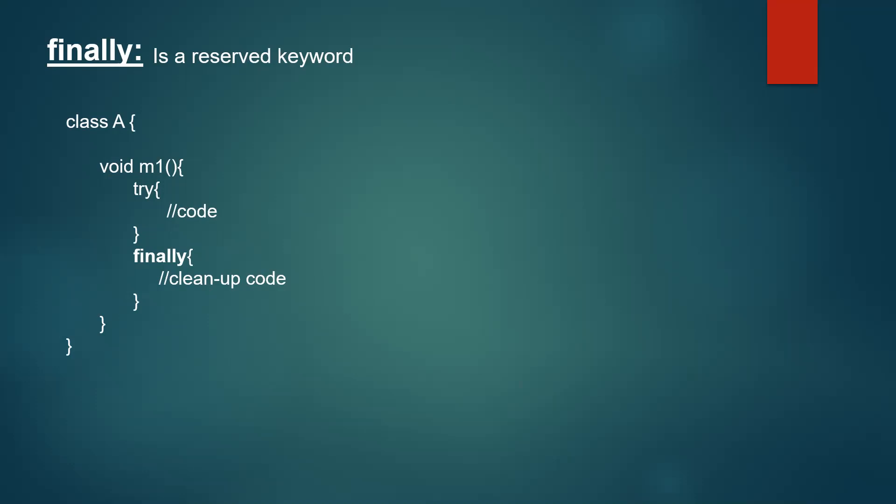Mostly the finally block will have the cleanup code for resources. We may have resources used in the try block like database connections, network connections, file IO — anything related to resources. All these resources will be closed in the finally block. This finally block will definitely be executed, irrespective of whether we get an exception or not, just before the control goes back to the origin of this method.